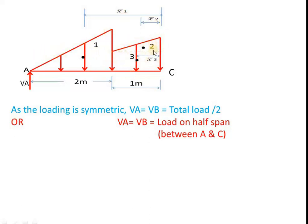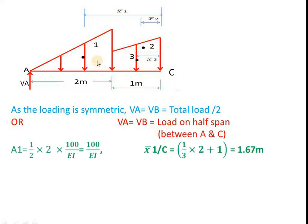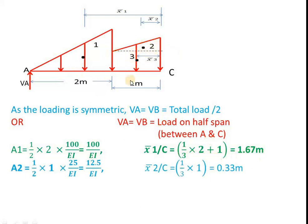Area A1 is the outer triangle: 1/2 × 2 × 100/EI = 100 by EI. Its centroid distance x1 bar from C is one third of 2 plus 1, giving 1.67 m. Area A2 is the inner triangle (height difference 75 − 50 = 25 by EI): 1/2 × 1 × 25/EI = 12.5 by EI. Its centroid x2 bar from C is one third of 1, giving 0.33 m.